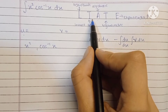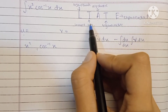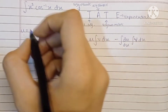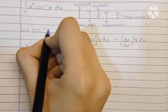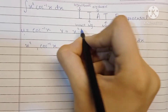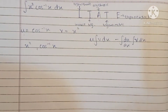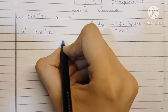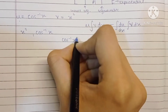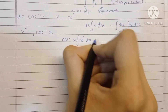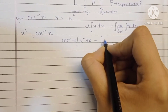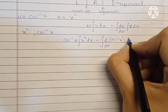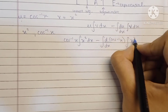We can see that inverse trigonometric comes before algebraic in the LIATE order. x squared is an algebraic term and cos inverse x is the inverse trigonometric term. Since inverse trigonometric comes before algebraic, cos inverse x gets selected as the first term. Thus u is cos inverse x and v is x squared. Now let's replace these in the integration by parts formula: cos inverse x into the integration of x squared dx minus the integration of the differentiation of cos inverse x into the integration of x squared dx.